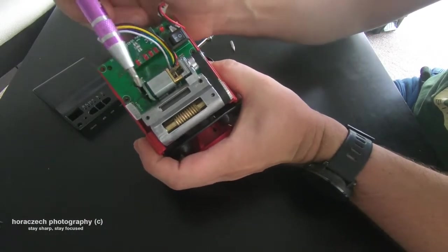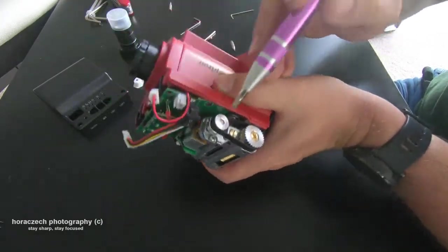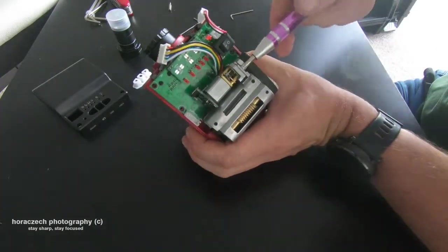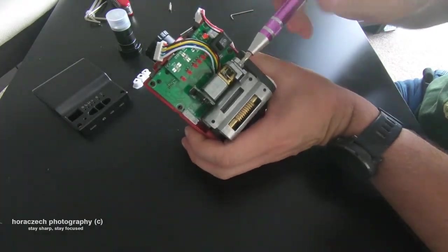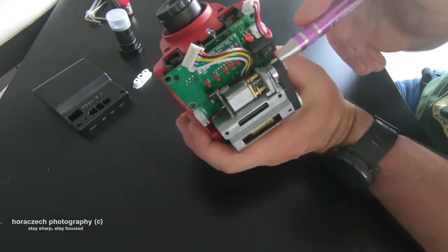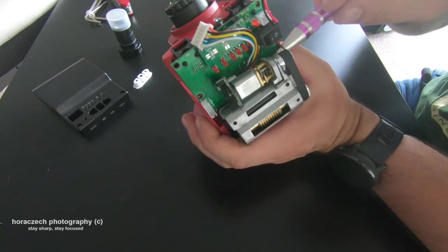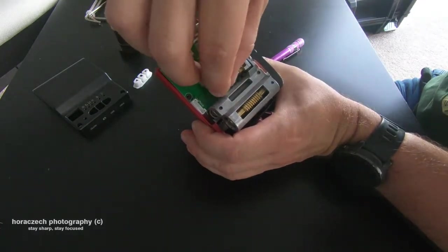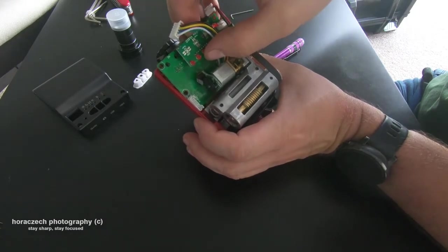So this motor is held by two screws, which are right here. So what I figured out is if we loosen them, we don't even need to take them out completely, if we just loosen them and give the motor a bit of a play, then the board is gonna go much easier out.